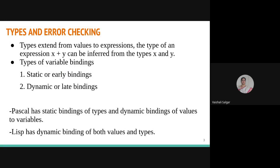Types extend from the values to expressions. We have already talked about different types in programming languages like character, number, integer, float, and so on. These types of variables are going to be extended to expressions, and how that will be done is what we will see in today's lecture. By using variable binding concepts already discussed, we will see how types and error checking will be done in programming languages.